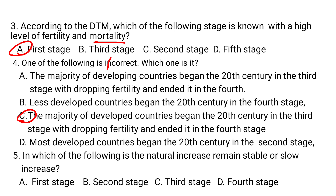Question 5: In which of the following stages does the natural increase remain stable or show a slow increase? A. First stage. B. Second stage. C. Third stage. D. Fourth stage. The first stage and the fifth stage of the demographic transitional model are known for stable natural increase. Stage 2 is known for rapid increase, and stage 3 for rapid increase that then slows down. Stage 4 is stable or slow increase, so the answer is A — but notably stage 4 also qualifies as stable or slow increase.